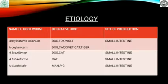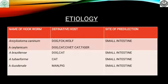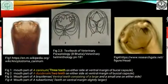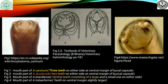There are five species which cause disease in the host: Ankylostoma caninum causes disease in dog and fox; Ankylostoma ceylanicum causes disease in dog, cat, civet cat, and tiger; Ankylostoma braziliense causes disease in dogs and cats; Ankylostoma tubaeforme causes disease in cats; and Ankylostoma duodenale causes disease in men and pigs. All five species have a common site of predilection: the small intestine.